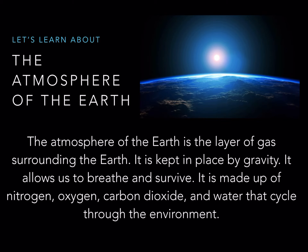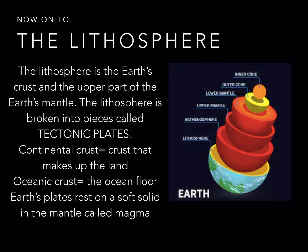The atmosphere of the earth is the layer of gas surrounding the earth. It is kept in place by gravity. It allows us to breathe and survive. It is made up of nitrogen, oxygen, carbon dioxide, and water that cycle through the environment. Water that cycles through the environment would be rain, snow, sleet, hail — any form of precipitation.